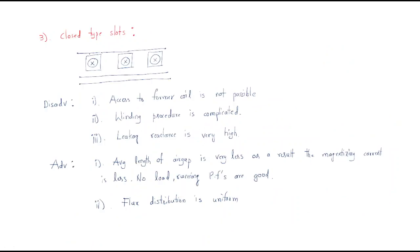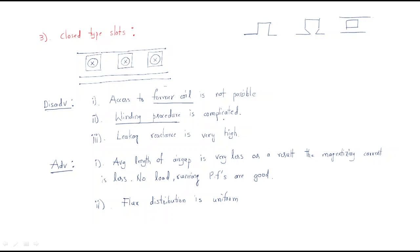Next we have the closed type slots. Open type slot means this open construction, semi-open type slot means partially open, and the closed type slot is completely closed — the slot is completely sealed. These slots also have some advantages and disadvantages. The disadvantages: first, access to former coil is not possible at all. Next, winding procedure is very very complicated. And leakage reactance is also very very high.